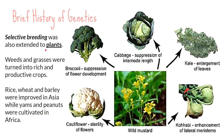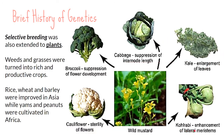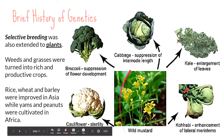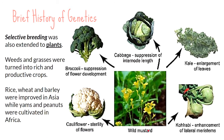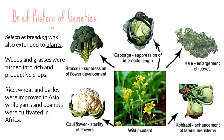Selective breeding was also extended to plants. Cauliflower, broccoli, cabbage, kale, and kohlrabi are all products of selective breeding from the wild mustard. Through domestication and selective breeding, our ancestors were able to produce these different varieties just by choosing which organisms they wanted to breed. Weeds and grasses were turned into rich and productive crops. Rice, wheat, and barley were improved in Asia, while yams and peanuts were cultivated in Africa.